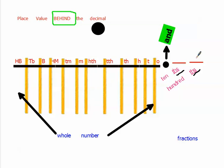Anything in the first place value to the right of the decimal is going to be in the tenths. The next place value is in the hundredths. For example, if I had .12, the 1 is in the tenths place value and the 2 is in the hundredths place value. So .12 is 12 hundredths.